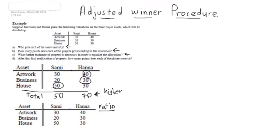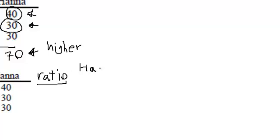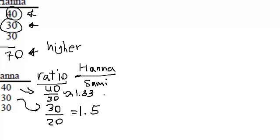We need to find the ratio of the assets that Hannah might need to transfer, which are the artwork and the business. We always take the highest bidder's bid as the numerator, so we have Hannah's bid over Sammy's bid. For the artwork, that's 40 over 30, which is approximately 1.33. And for the business, we have 30 over 20, which equals 1.5. The lowest ratio item gets transferred first, so that is the artwork in this case.